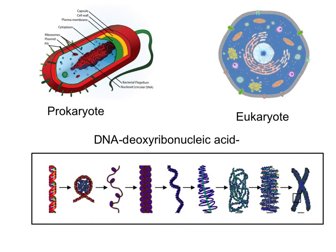DNA is found in all types of cells — prokaryotic and eukaryotic. In a prokaryotic cell, the DNA is not enclosed in a nucleus. It is a singular, single-strand, circular chromosome. In a eukaryotic cell, the DNA is included in the nucleus and it is double-stranded, tightly wound in the form of chromosomes, which are not circular.